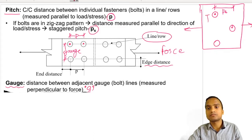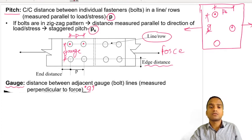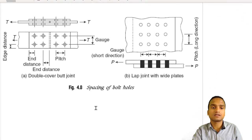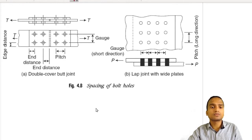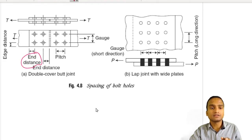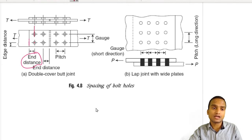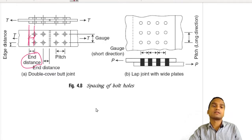In the case of a staggered pattern of bolting, G is measured as shown, and both PS and G are identified. There are two more parameters: end distance and edge distance. End distance is the distance between the center of the bolt in the ending row and the end of the plate.